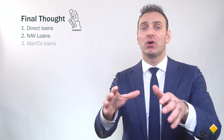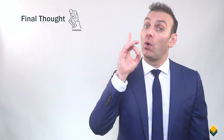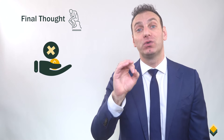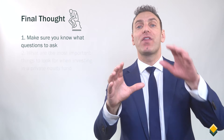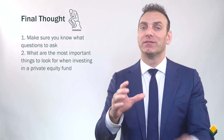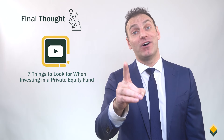Here's a final thought. There are so many ways that private equity firms can borrow money — just to name a few: direct loans, NAV loans, Manco loans, and subscription lines of credit. Private equity firms don't have to disclose all the loans they're taking on, and if they do disclose certain loans, they don't always have to disclose the interest rates they are paying. So as an investor, make sure to ask about the loans when conducting due diligence. Private equity funds are private by definition, so make sure you know what questions to ask. A good place to start is our video titled Seven Things to Look For When Investing in a Private Equity Fund.